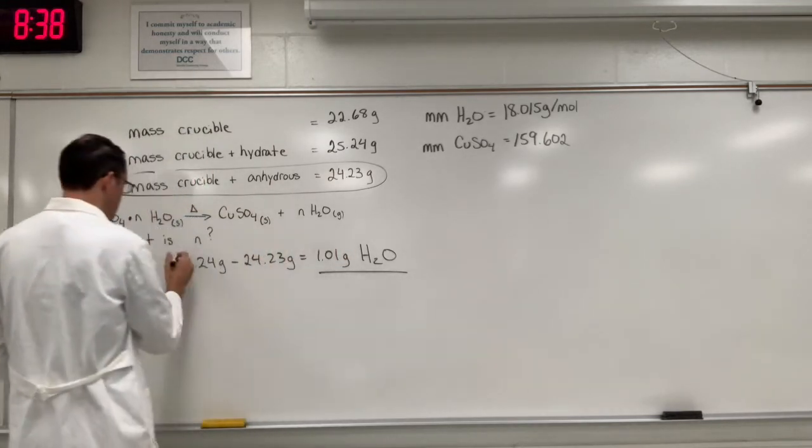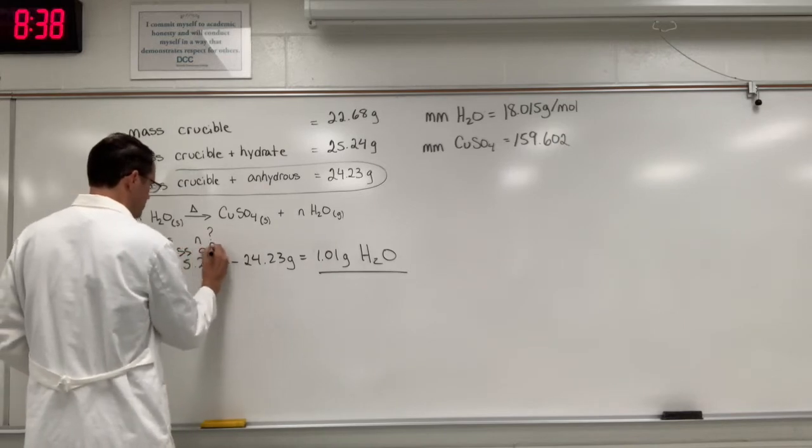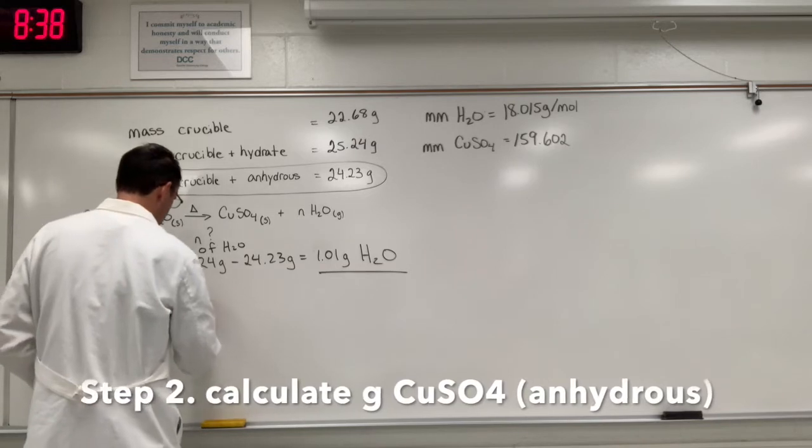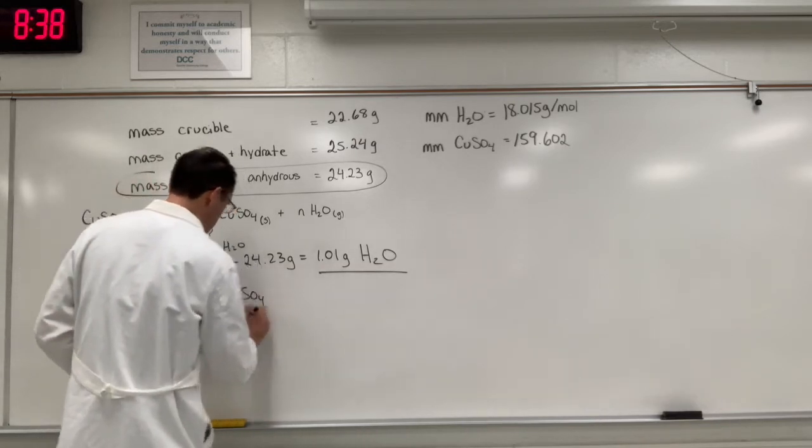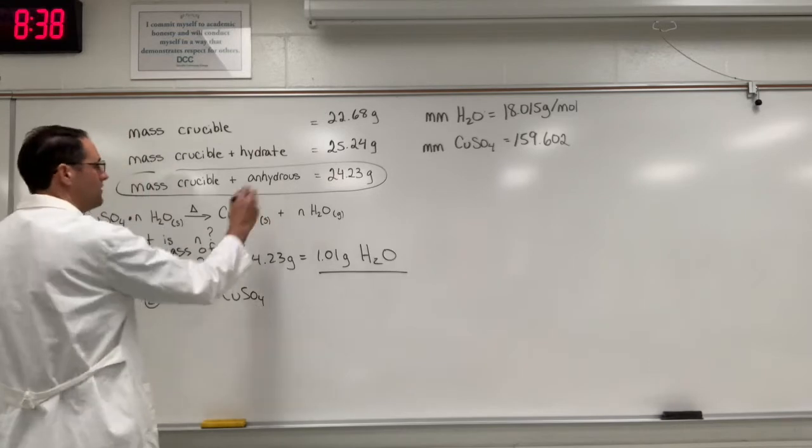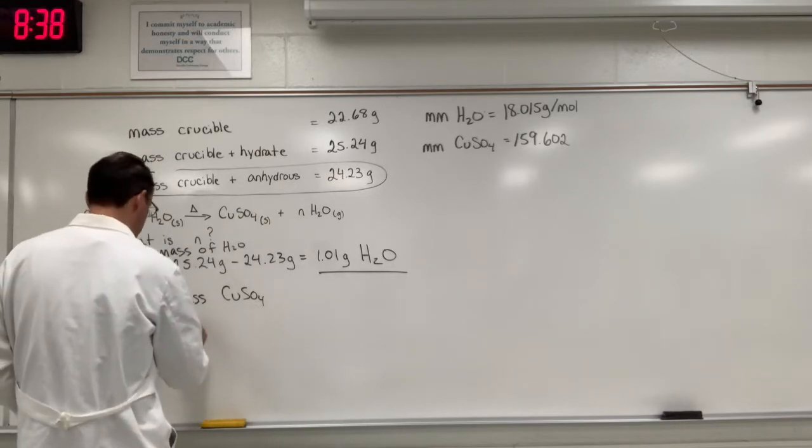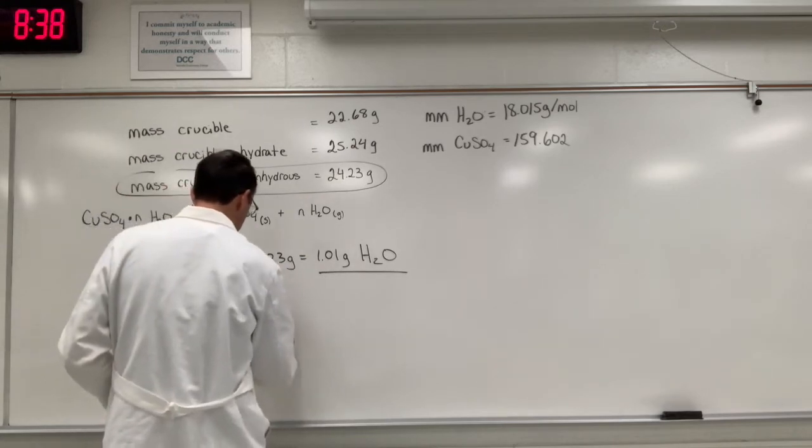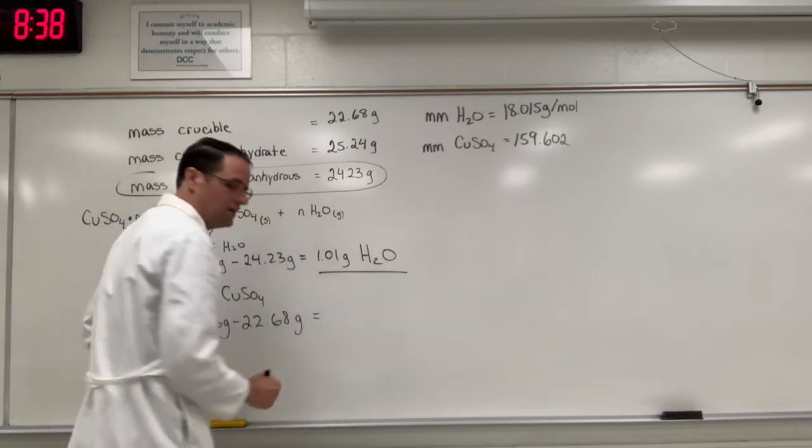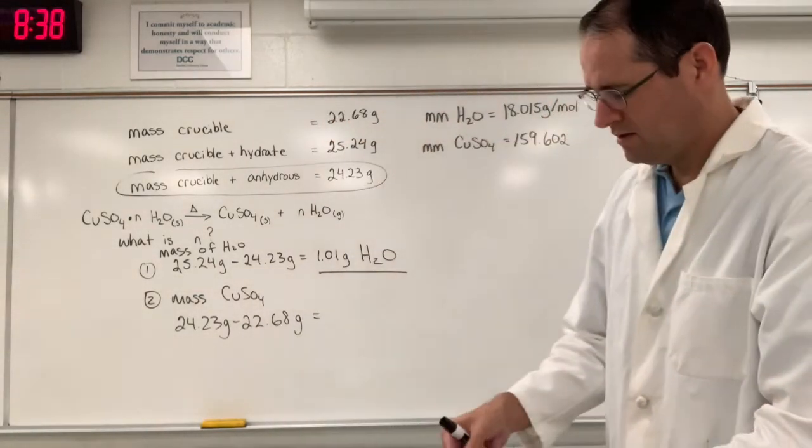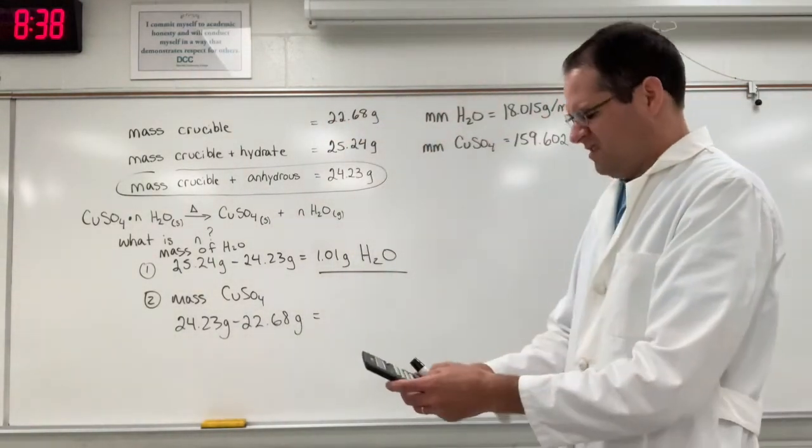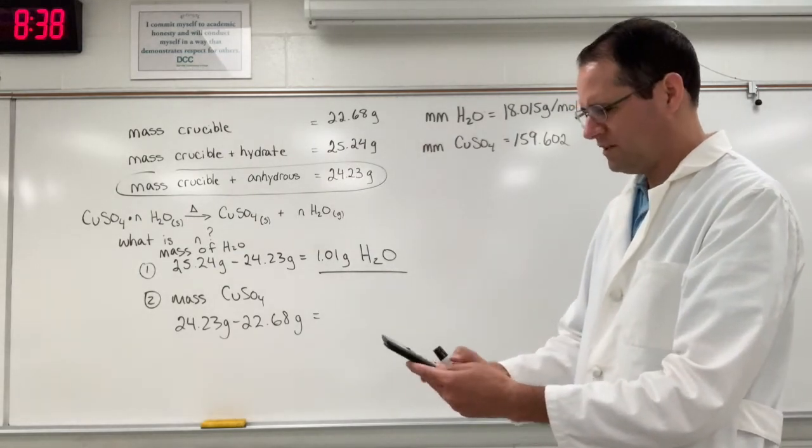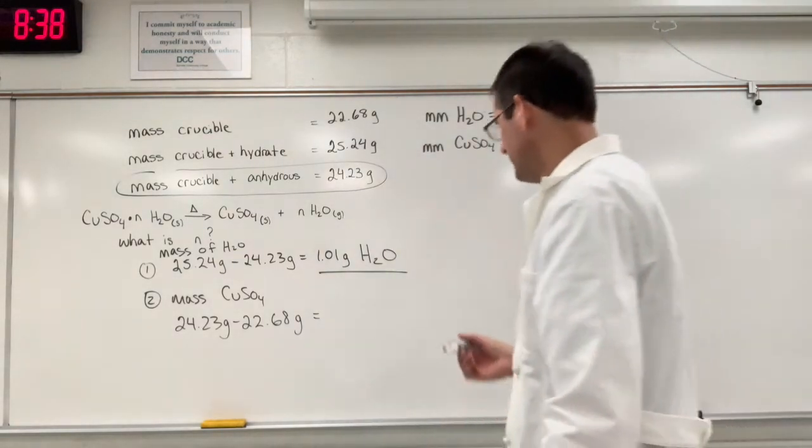So this is called step one is the mass of water. Step two will be the mass of copper sulfate with no water. And so it's going to be 24.23 grams. And we want to subtract 22.68 grams. And again, show your work in case you're going to be graded on your ability to show work. And I get 1.55 grams.